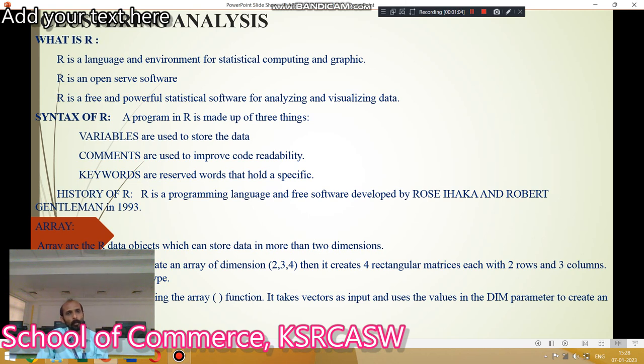Syntax of R. A program of R is made up of three things: one is variables, number two, commands, and number three, keywords. Variables are used to store the data and commands are used to improve the code readability and keywords are reserved words for hold specific.